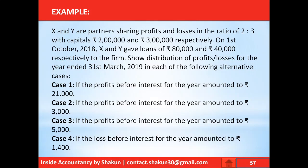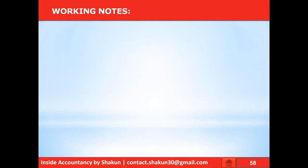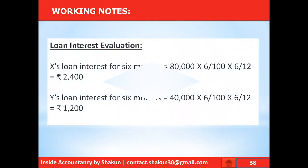The basic question remains the same but with 4 different profit figures. For the working note, the calculation of interest on loan for X and Y is made on 80,000 and 40,000 respectively at the rate of 6% per annum, but for 6 months only, because the loan was taken on 1st October. That is why it is multiplied by 6 divided by 12.